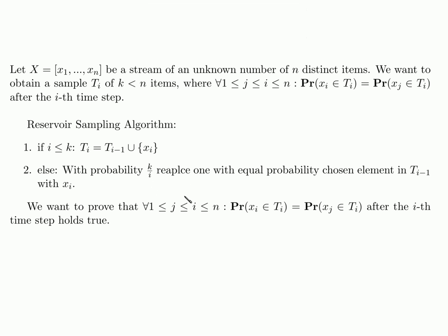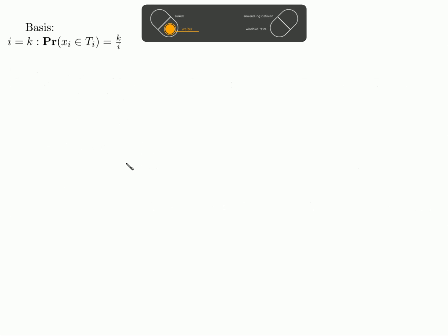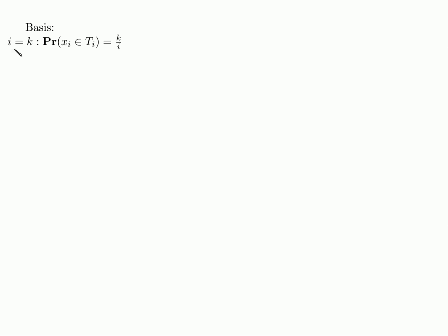We want to prove that this algorithm indeed produces this property where every item from the stream is in the sample with equal probability. The basis here: we say that i equals k, where k again is the size of our sample. The probability of any item being in the sample is k over k, which is just 1. So indeed, every item is in the sample with probability 1, and in that case, this is equal probability for every item in the sample.